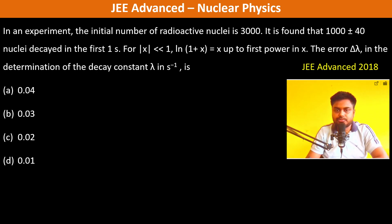In an experiment, the initial number of radioactive nuclei is 3000. It is found that 1000 ± 40 nuclei decayed in the first one second. For |x| << 1, ln(1 + x) ≈ x up to the first power in x. The error Δλ in the determination of the decay constant is: